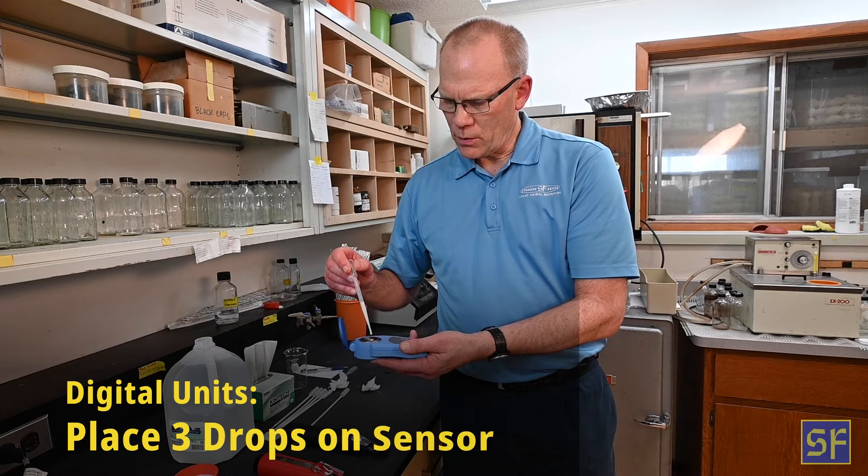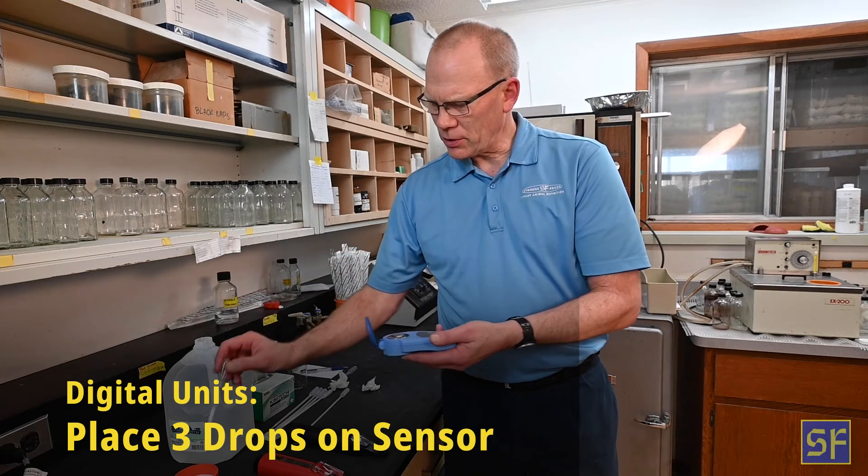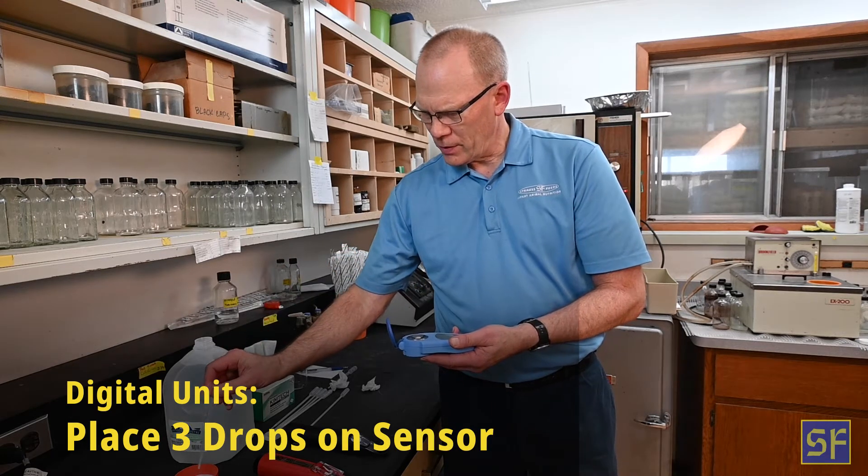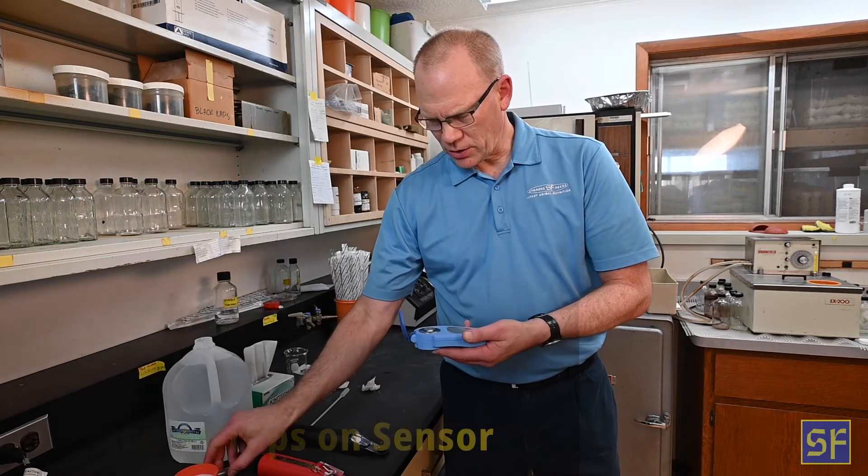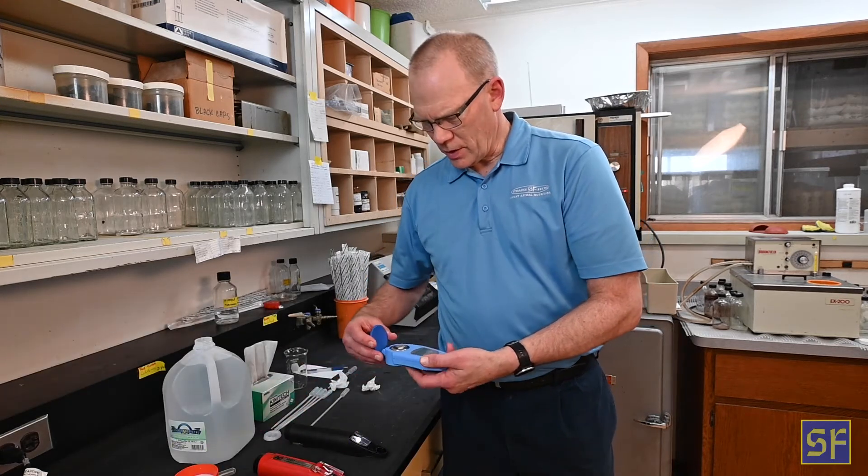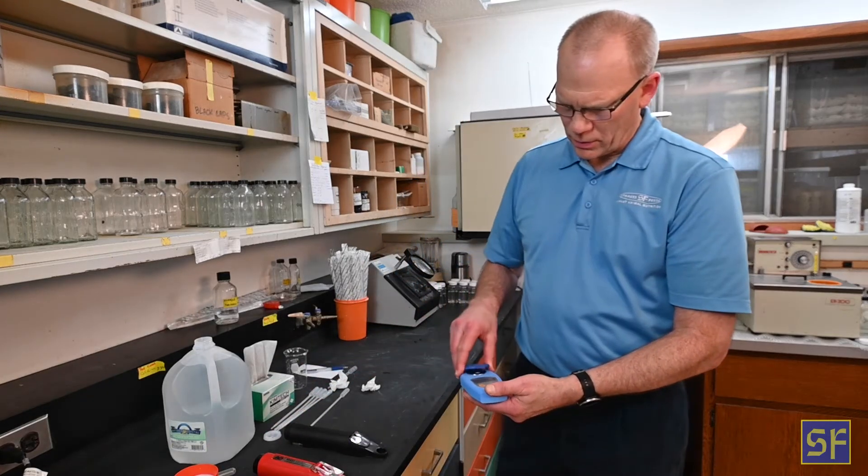On the MISCO, we need to put about three drops so we make sure we cover the lens well. I've got a clean dropper here, so I'm just going to close this. And again, it's sitting on the unit. Close the eye.